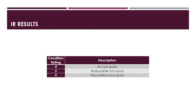The last category is infrared results, or IR tests. This category has only three ratings: 4, 2, and 0. For a rating of 4, no hotspots are detected. For a rating of 2, there are noticeable hotspots, but they do not jeopardize safe ongoing operations. For a rating of 0, there are very serious hotspots detected on the arrestor.